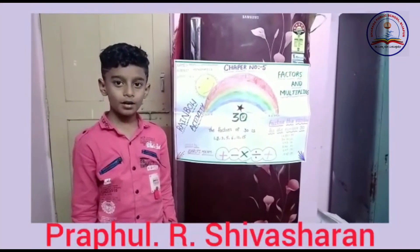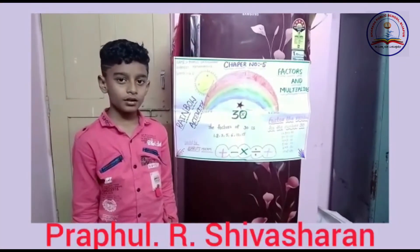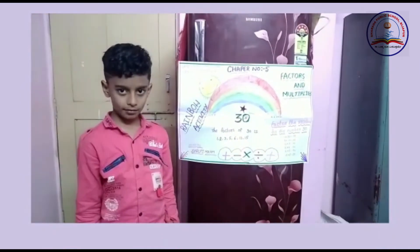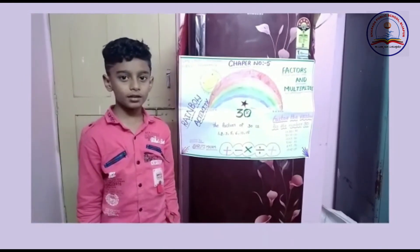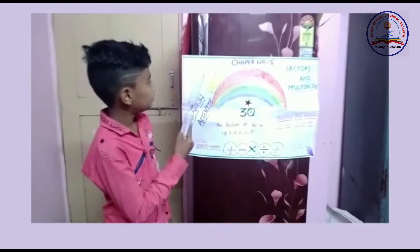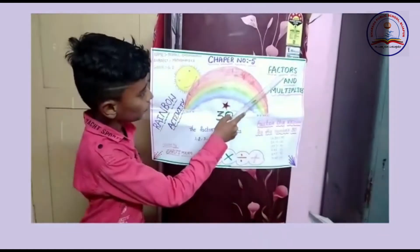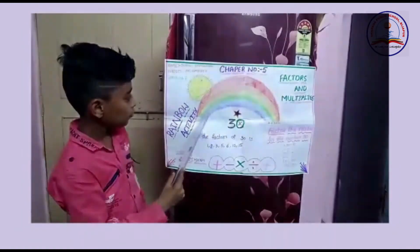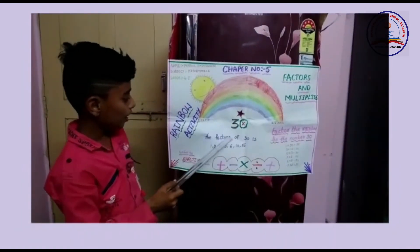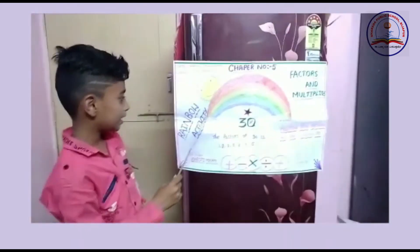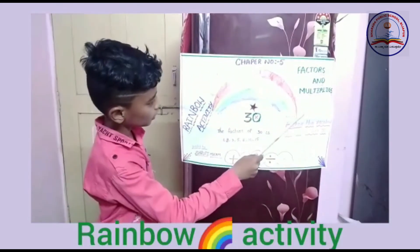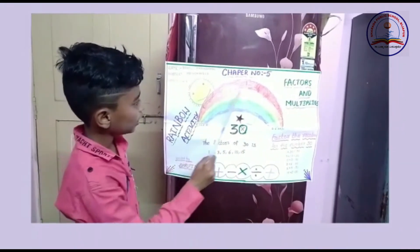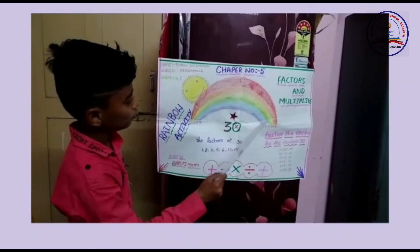Good morning ma'am. My name is Praful. I am studying at Akshara Public School from 4D class. I am going to explain the activity, subject Mathematics, Chapter number 5, Factors and Multiples. I have taken the number 30 to explain the factors with the help of an activity. 1 × 30, 3 × 10, 10 × 3, 5 × 6.